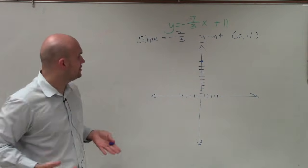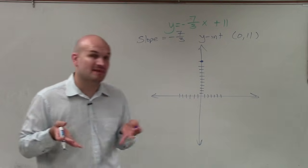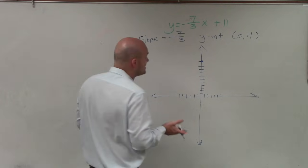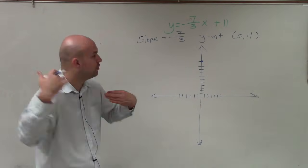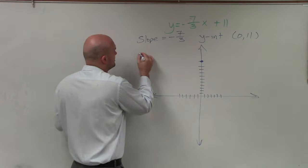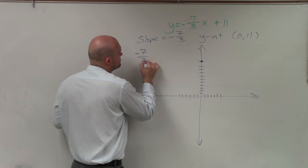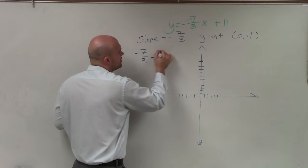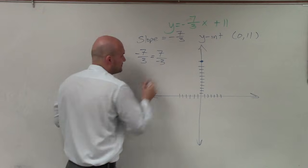So now what I need to do is create my next point. And remember, the slope tells us the rate of change between any two points on your graph. And you can see my slope is negative 7 thirds. So please note that negative 7 thirds can be written as negative 7 over 3 or 7 over negative 3.